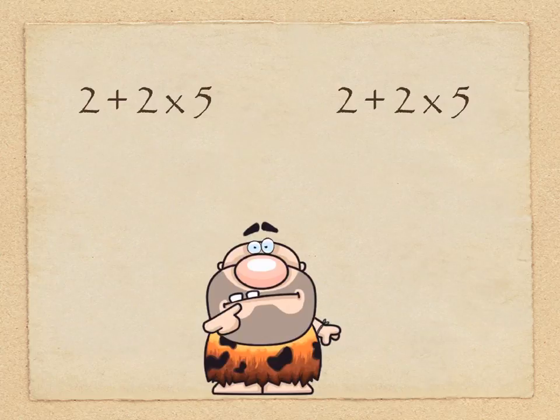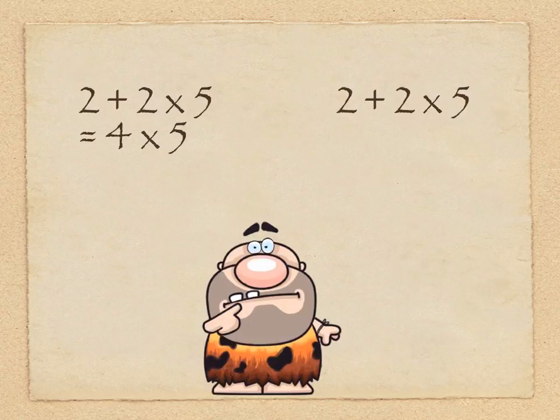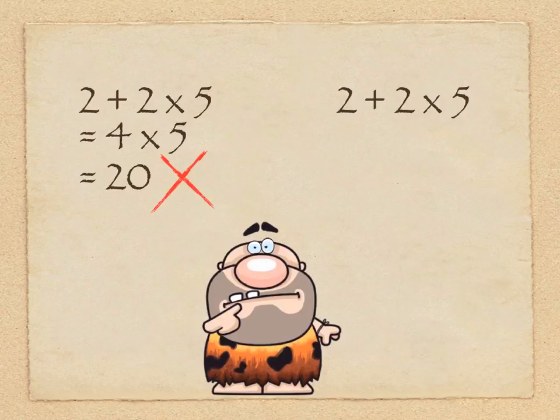We have 2 plus 2 times 5 and we have a confused caveman. He doesn't know the first thing to do. Does he want to do that 2 plus 2 or does he want to do the 2 times 5 first? He decides in this first example to add the 2 plus 2 to get 4 and then multiplies that by 5 to get 20. But unfortunately, that's the incorrect way of doing it.